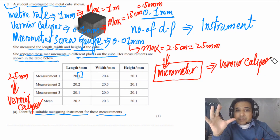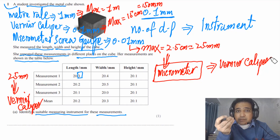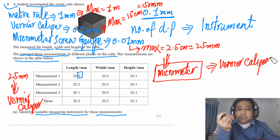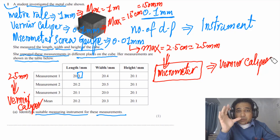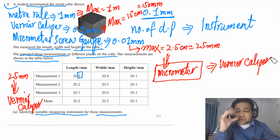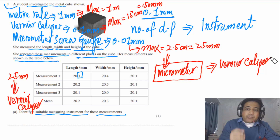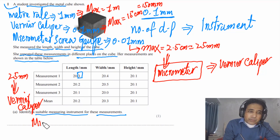If your concepts are clear, this practical paper is just fun. Practical skills are very important in physics, but most students struggle because they memorize rather than understand instruments and haven't done enough lab work. The best instrument for this cube question is the micrometer; writing vernier caliper is also acceptable.